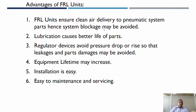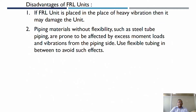Advantages: FRL units ensure clean air delivery to the pneumatic system; system blockage may be avoided; lubrication causes better life of parts; regulator devices avoid pressure drop or rise so that leakages and part damages may be avoided; equipment lifetime may increase; and installation is easy, with easy maintenance and servicing. Disadvantage: if an FRL unit is placed in an area of heavy vibration, it may damage the unit. Piping materials without flexibility, such as steel tube piping, are prone to be affected by excess movement loads and vibration. Use flexible tubing in between to avoid such effects.